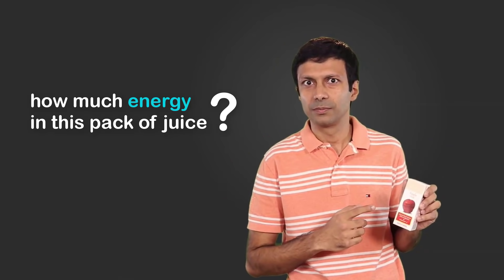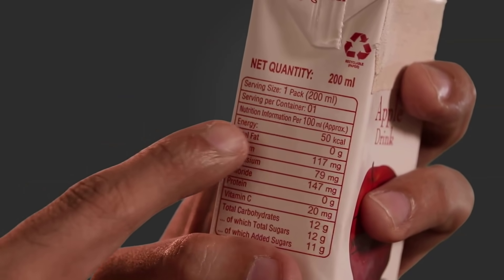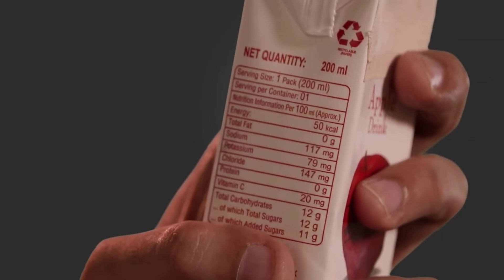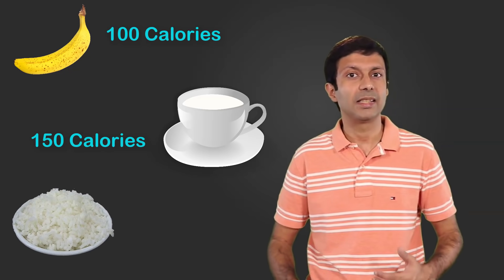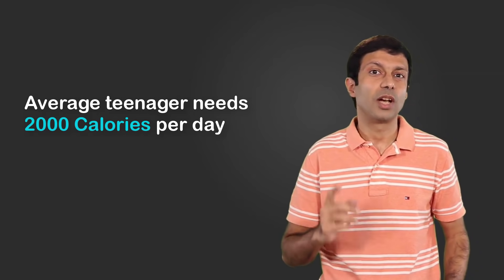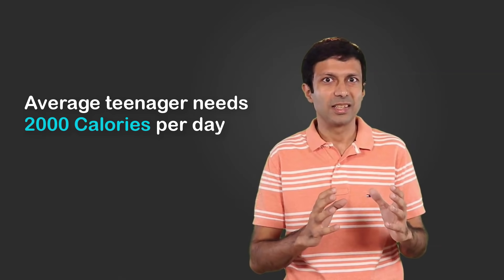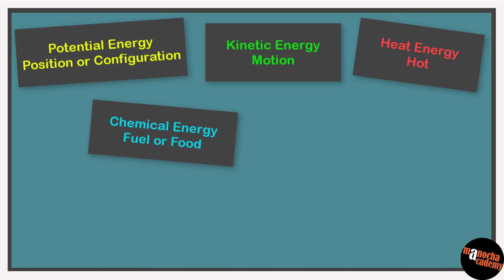Do you know how much energy you get from a pack of juice? You can find that by looking at the product information. This 200 ml juice contains 50 Kcal of energy. A banana has about 100 Kcal of chemical energy, a cup of milk contains about 150 Kcal, and a bowl of rice is 200 Kcal. An average teenager needs about 2000 Kcal of energy per day. Chemical energy is linked to fuel or food.